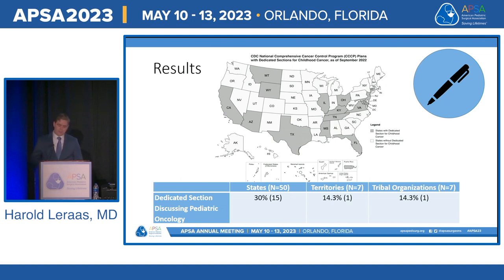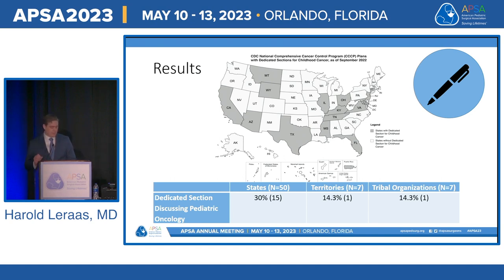We then sought to assess the degree of inclusion of pediatric cancer care in these plans. This map represents states that had a dedicated section on pediatric oncology. As you can see, only 30% of states included a specific section on pediatric cancer care.